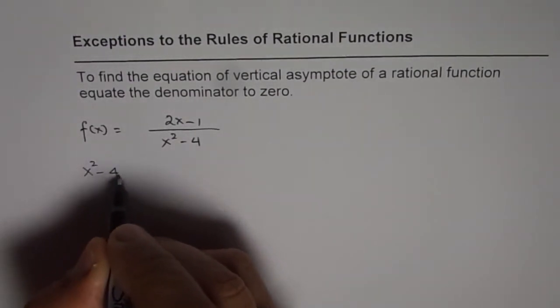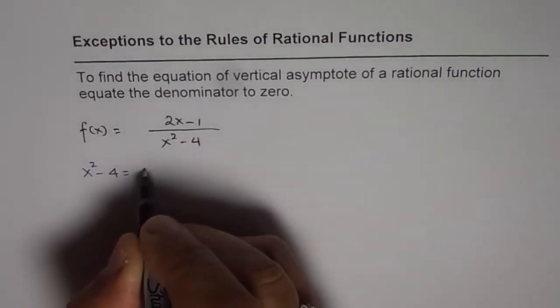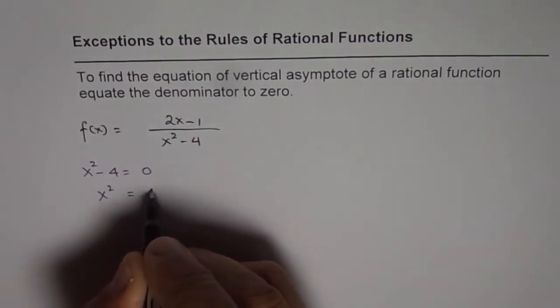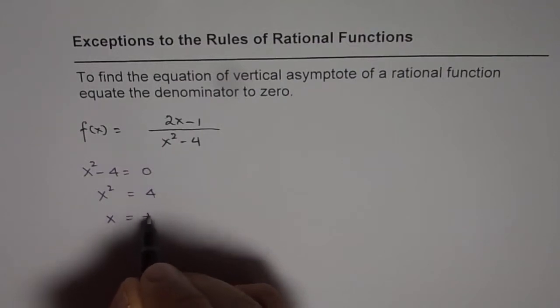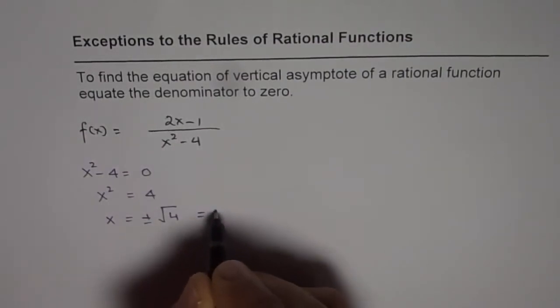We say x squared minus 4 equals 0, then we say x squared equals 4, x equals plus minus square root of 4, which is indeed equals to plus minus 2.